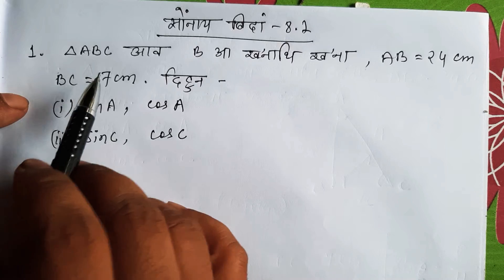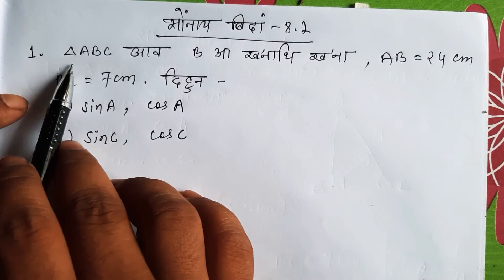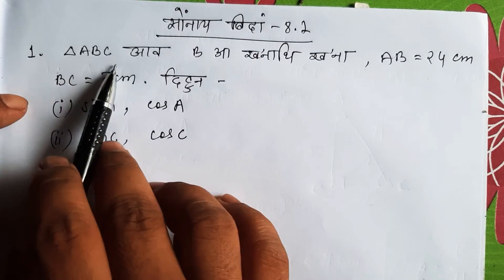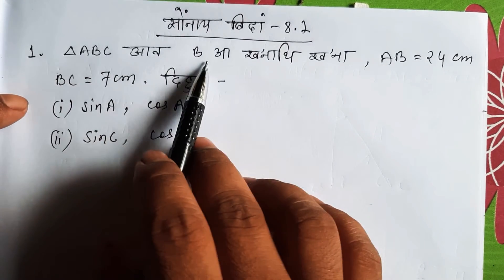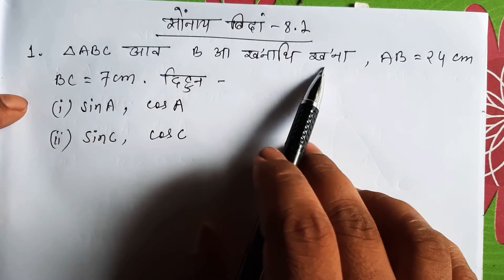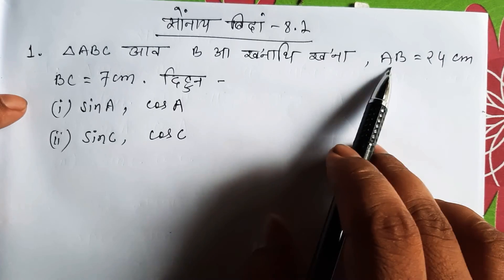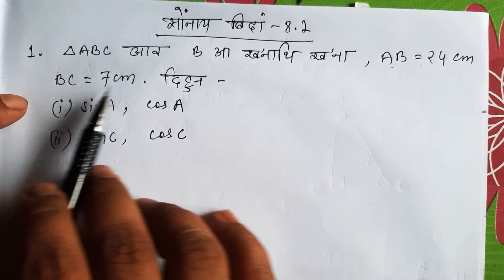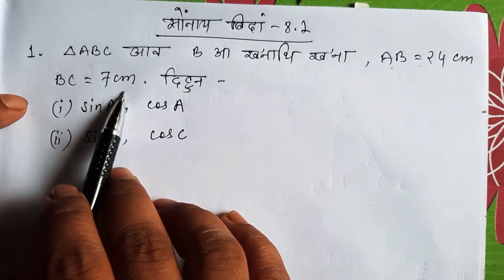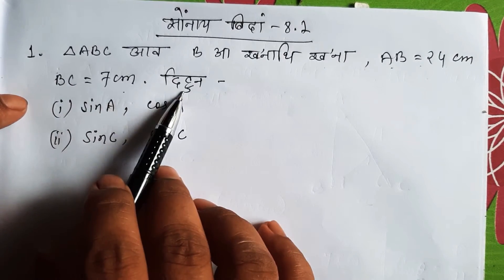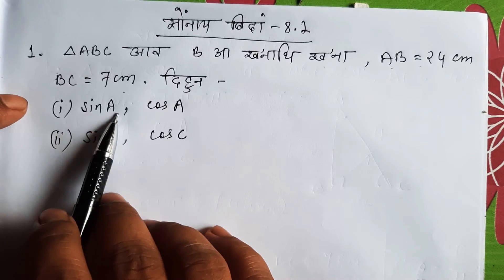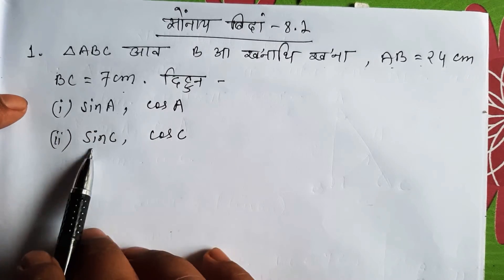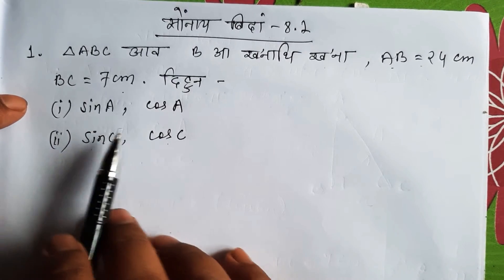If you have questions about triangle ABC: B is 24 cm, BC is 7 cm. I'm going to talk to you about sine A, cos A, sine C, and cos C.